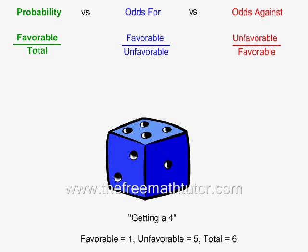Probability is equal to favorable over total, which in this case is equal to 1 over 6. Odds for is equal to favorable over unfavorable.